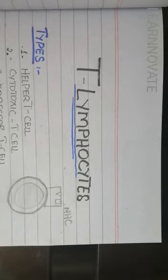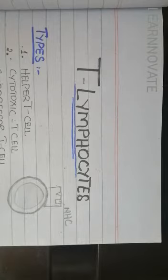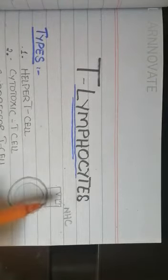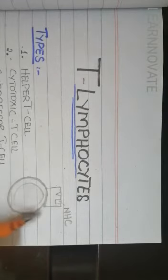These lymphocytes are educated and matured in the lymph node, the bone marrow, or the thymus. Coming to the functions of the T lymphocyte — the thymic lymphocyte — it has a structure with an MHC protein attached. We are going to discuss the characteristics, functions, and types of T lymphocytes.